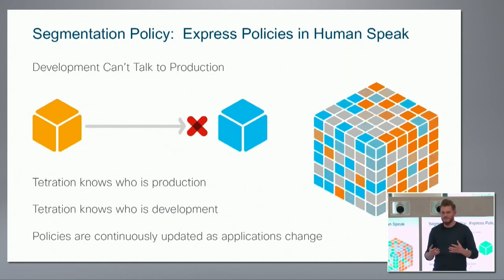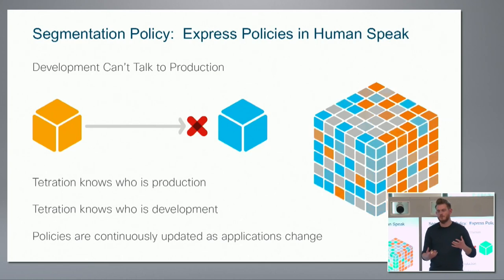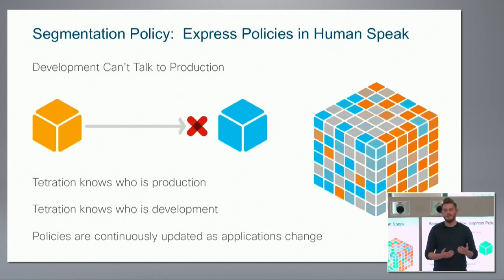If I tag an endpoint as production one minute and then as non-production the next, based on that change in identity Tetration recalculates the rules pushed down to the hosts and updates the segmentation. The data center is constantly evolving at any time of day without any human input — making it much more self-driving.